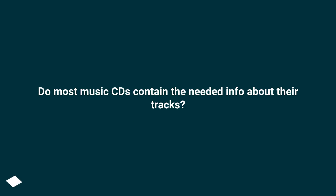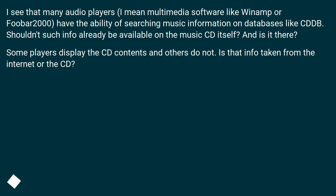Do most music CDs contain the needed info about their tracks? Many audio players — multimedia software like Winamp or Foobar 2000 — have the ability to search music information on databases like CDDB. Shouldn't such info already be available on the music CD itself? Some players display the CD contents and others do not. Is that info taken from the internet or the CD?